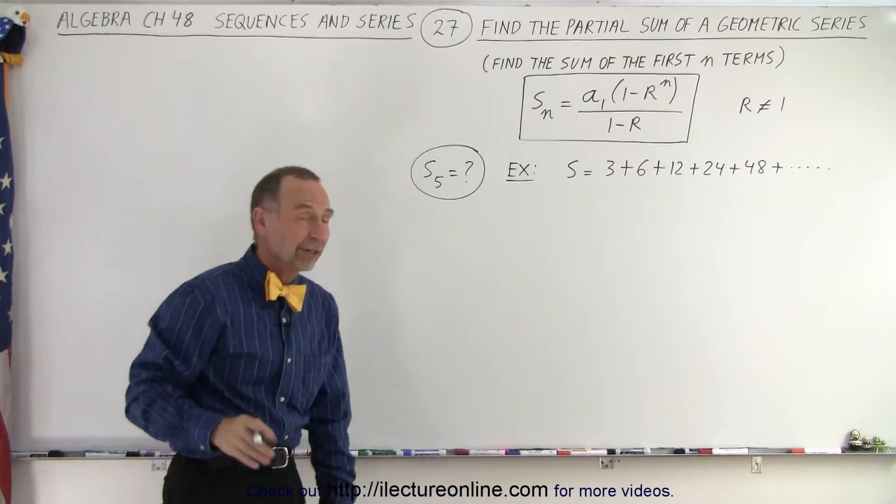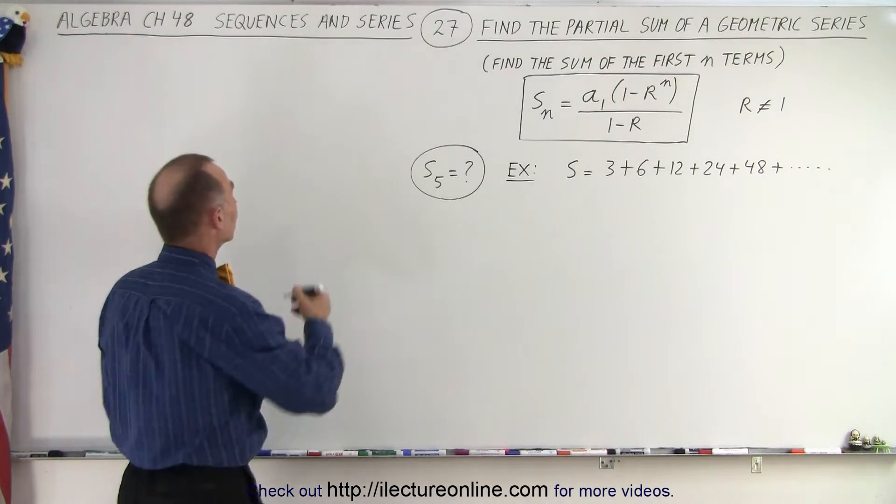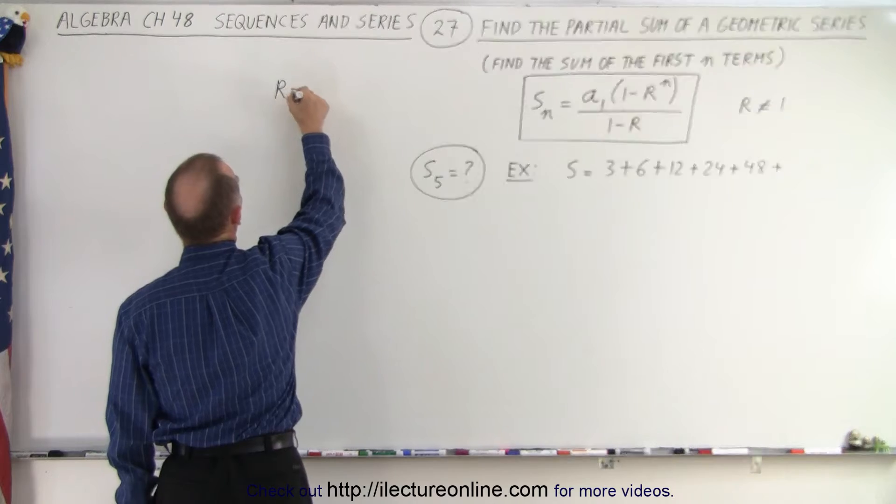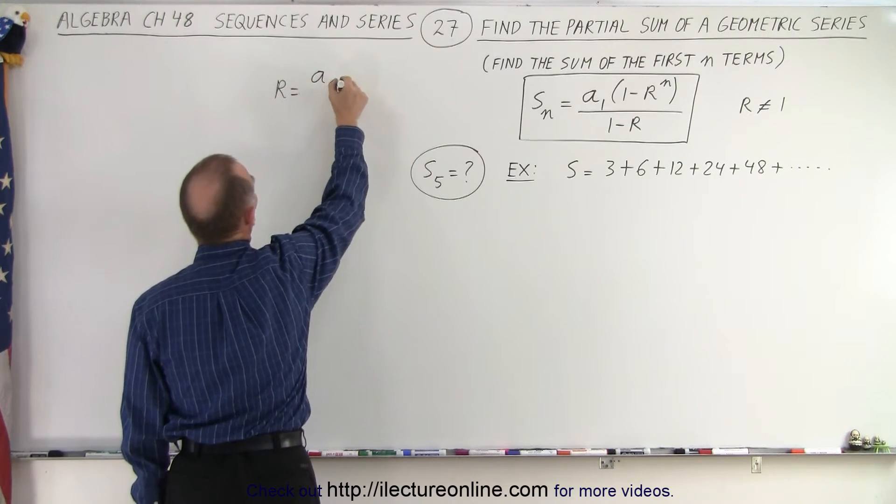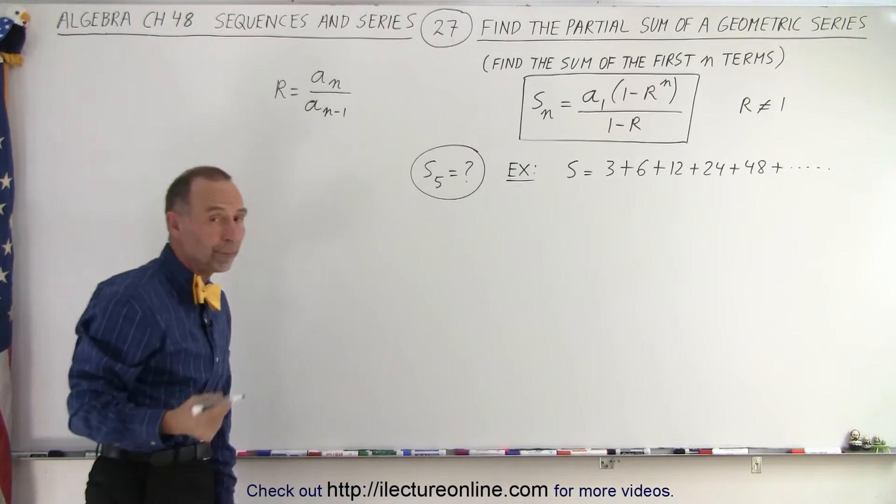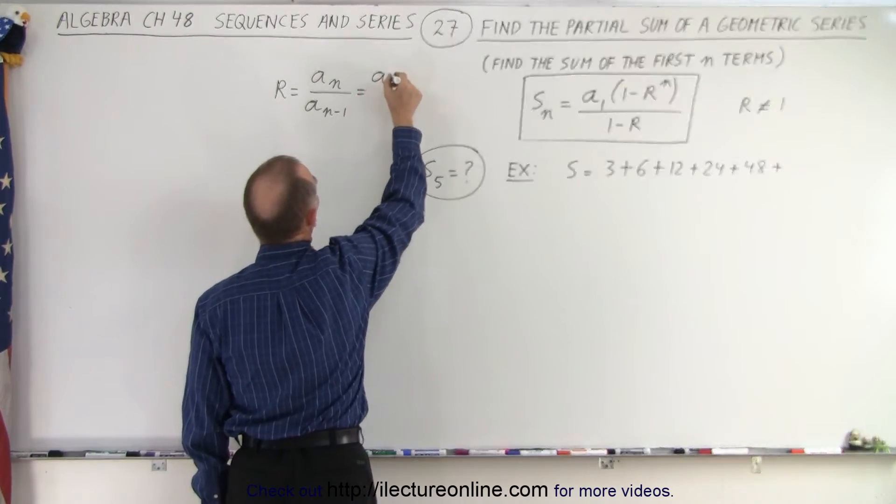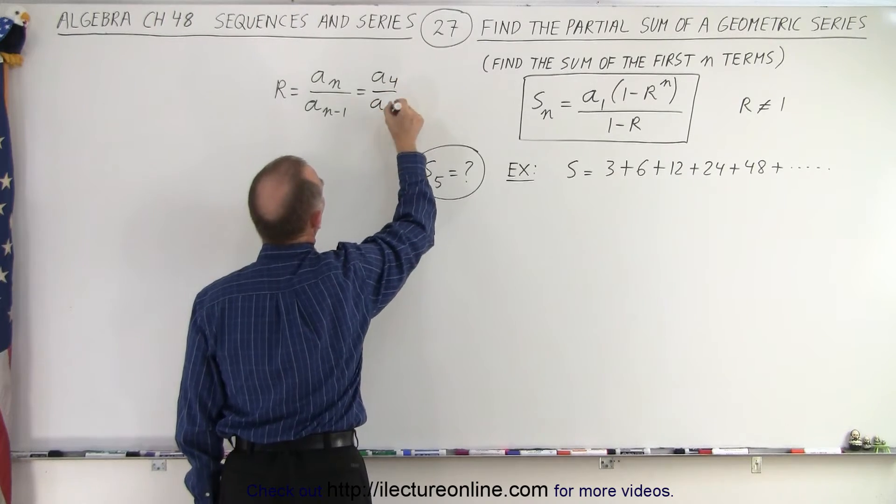Now that we have the equation, we can figure that out. But first, we need to find the common ratio, which is defined as any term divided by the previous term. It doesn't matter which two you pick. In this case, let's take the 4th term and divide it by the 3rd term.